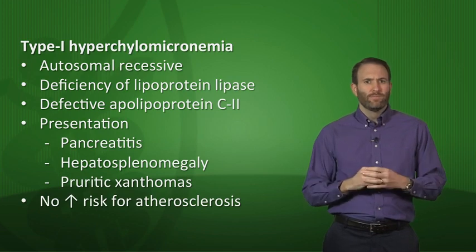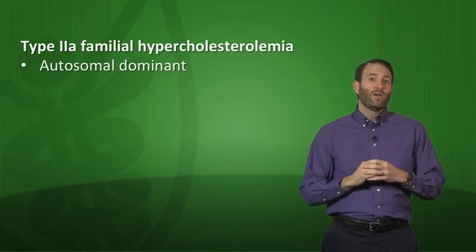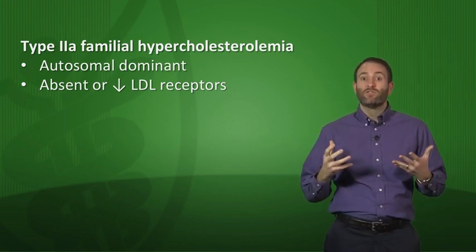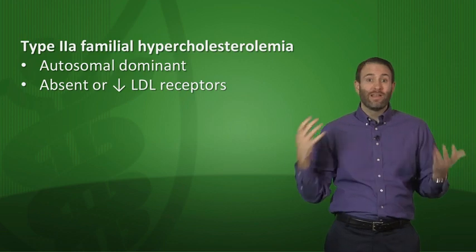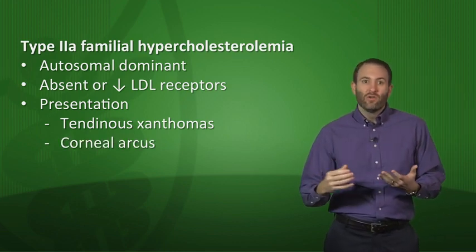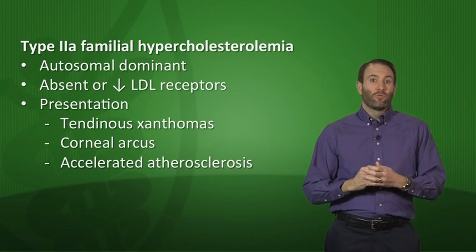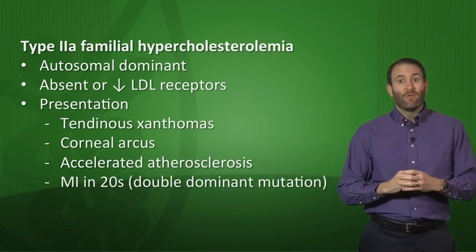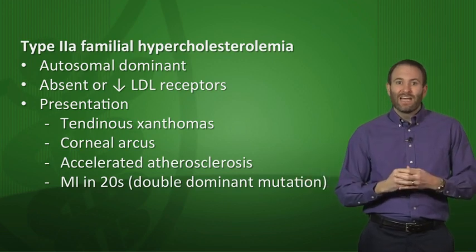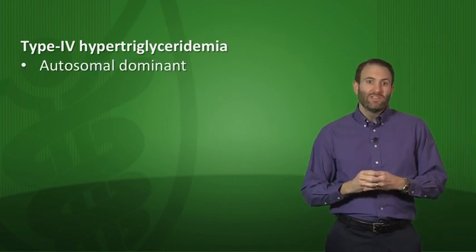Type 2a familial hypercholesterolemia is autosomal dominant, caused by absent or decreased LDL receptors. Without LDL receptors to clear LDL from the blood, levels rise significantly. Patients present with tendinous xanthomas — notably on the Achilles tendon — and corneal arcus. Most importantly, this condition causes accelerated atherosclerosis. Individuals with a double dominant mutation can have heart attacks as early as their 20s, so think of this in young, otherwise healthy MI patients.